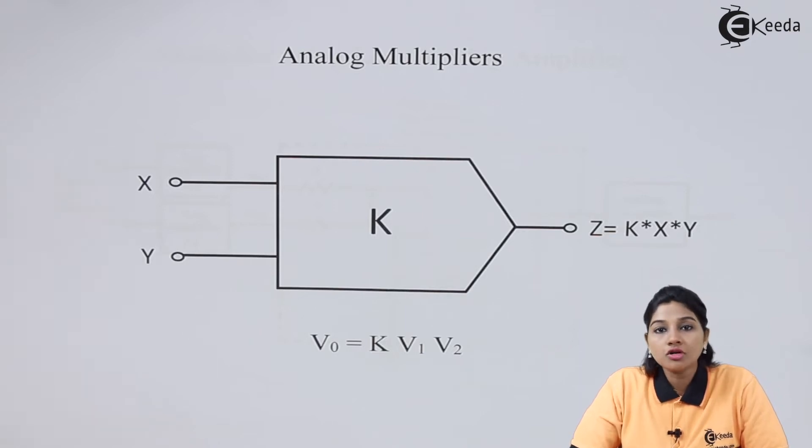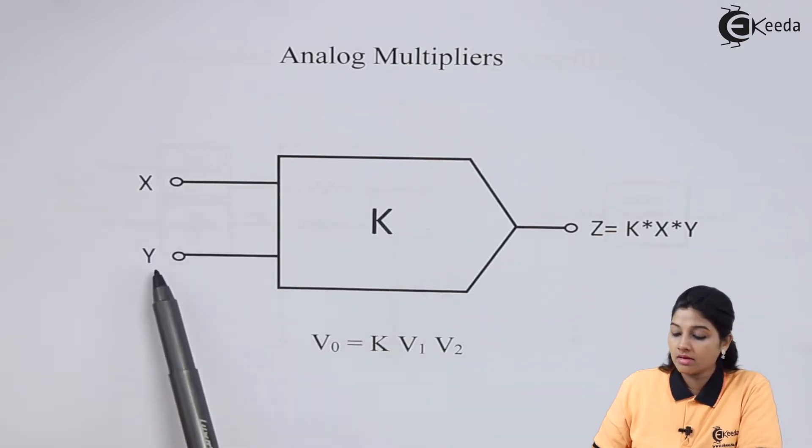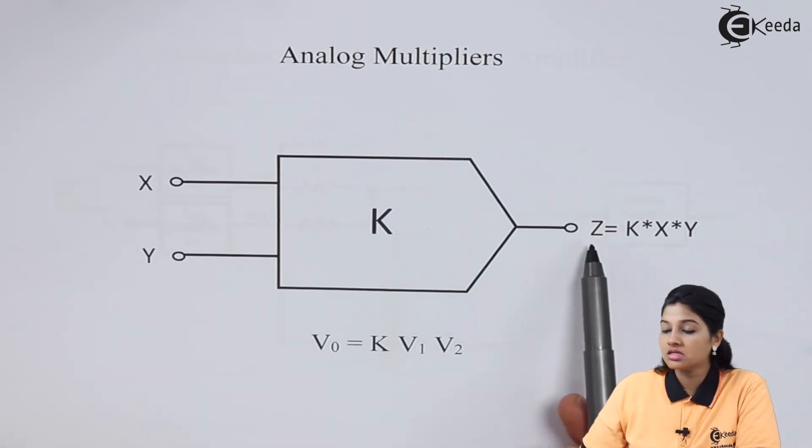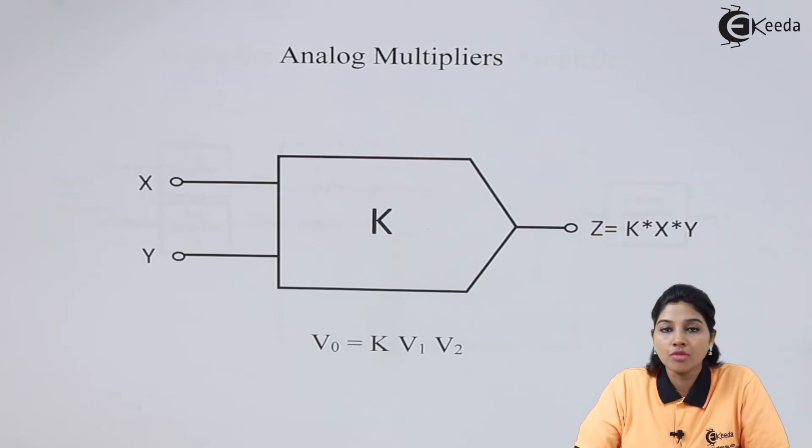Now first understand the symbol of Analog Multiplier. Let's see the symbol first. In the symbol, there are two input signals, X and Y, one output signal that is equal to Z, and K is called as Scaling Factor of Multiplier.